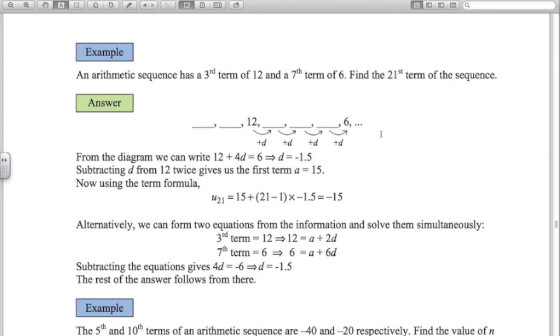Now I want to find the 21st term. The way I'm going to do that is find what the common difference is and kind of work backwards to find what the first term was. Then I can use the formula. You can see that I'm adding on D 1, 2, 3, 4 times to go from 12 to 6. So we've made this jump from 12 to 6. In other words, we've gone down 6, and we've done it in 4 jumps.